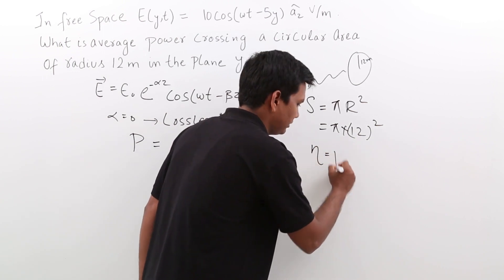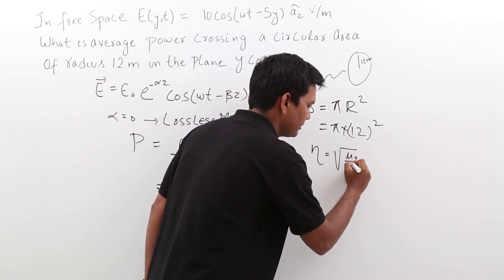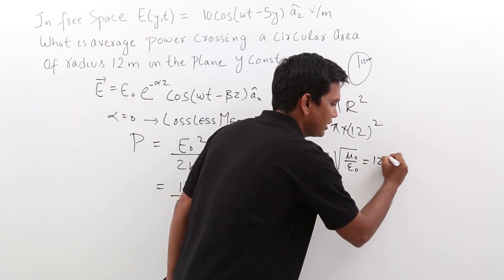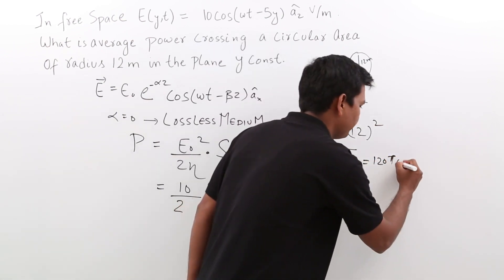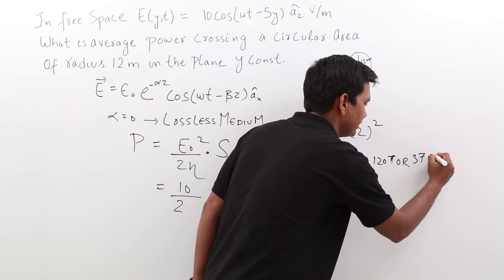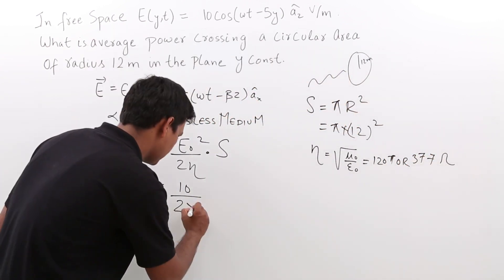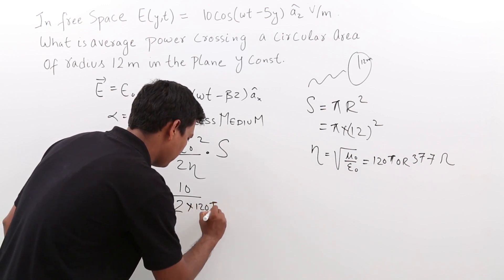How we know that? η is nothing but √(μ₀/ε₀) for a free space, which ultimately comes out to be either you can say 120π or 377 ohm. This will be η. So, if I substitute here, let me substitute as 120π.